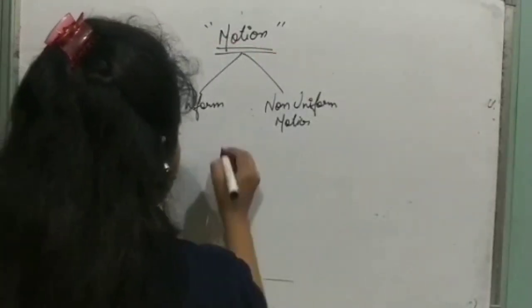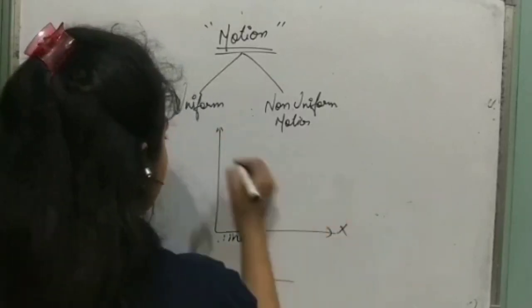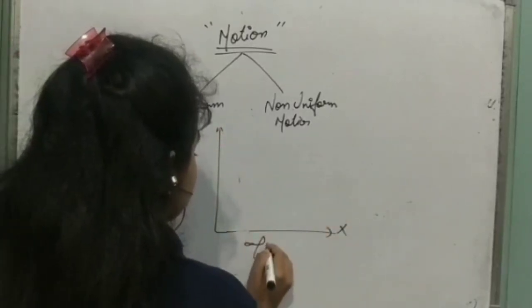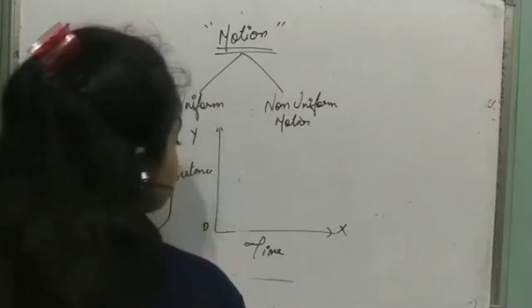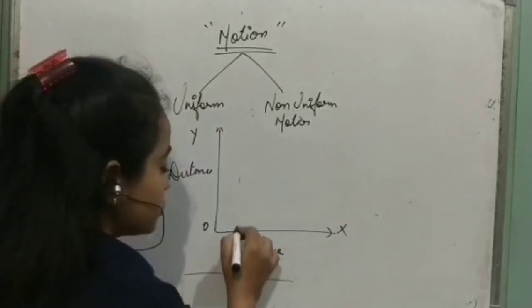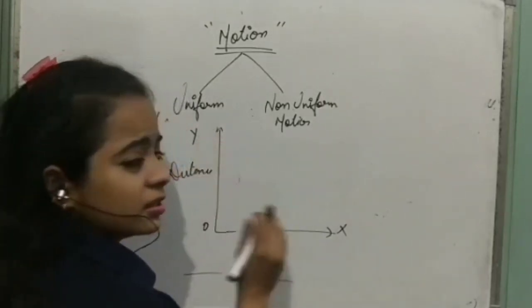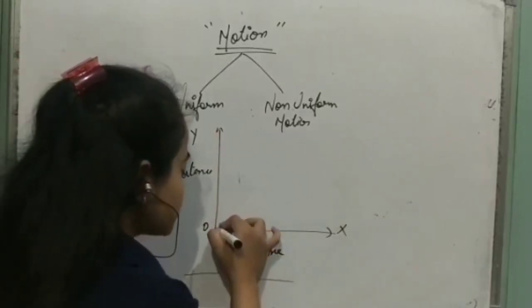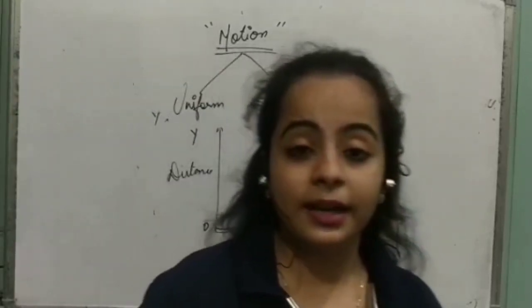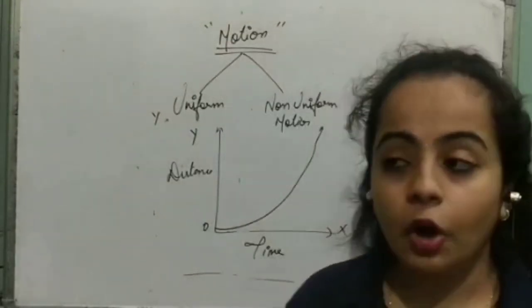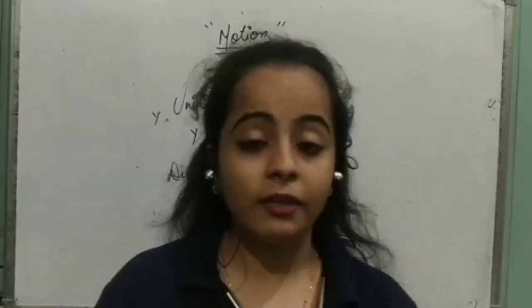Now let's see non-uniform motion. This is the x-axis and this is the y-axis. Down I am taking time and on the y-axis I am taking distance. For non-uniform motion, the speed line is always a curve — not a straight line. Non-uniform motion is when a body is not covering equal distance with equal intervals of time; the speed is fluctuating.